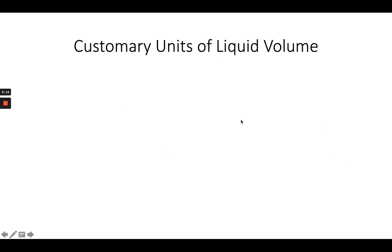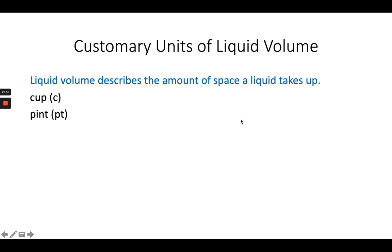Now we're going to talk about liquid volume. This describes how much space a liquid takes up. Think about a water bottle or a milk jug. It's going to have those units on there that tell you how much liquid is in there. So we can have cups, and the abbreviation for cup would be C. We have pints, quarts, and gallons.